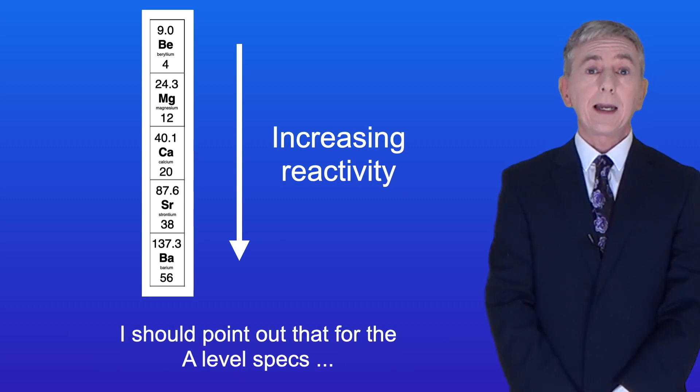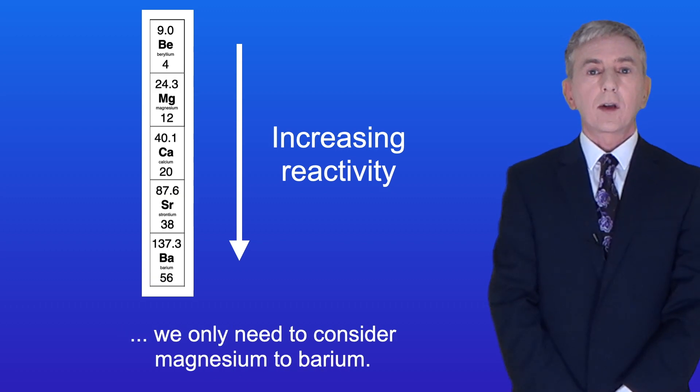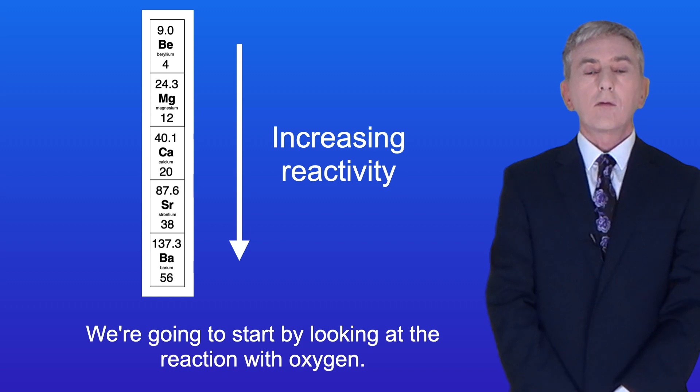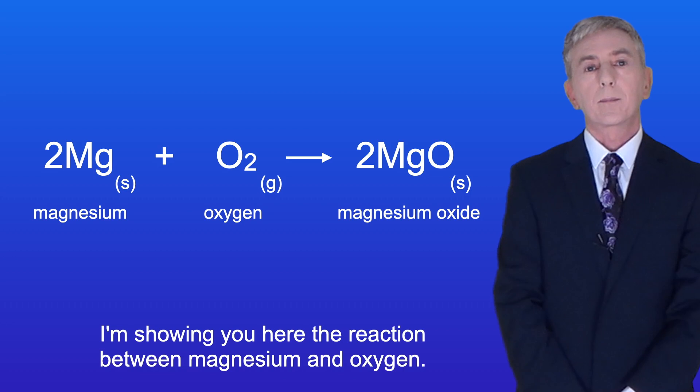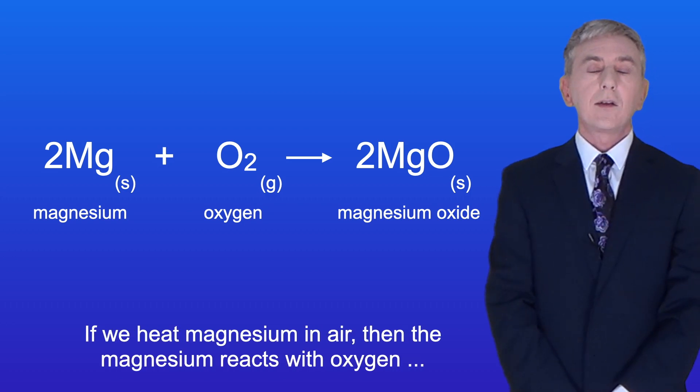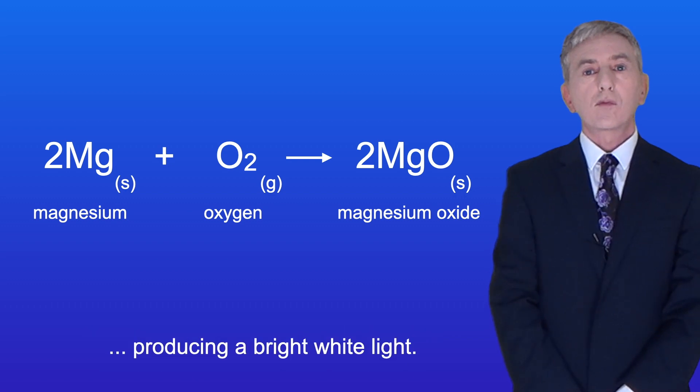I should point out that for the A level specs, we only need to consider magnesium to barium. We're going to start by looking at the reaction with oxygen. I'm showing you here the reaction between magnesium and oxygen. If we heat magnesium in air, then the magnesium reacts with oxygen, producing a bright white light.